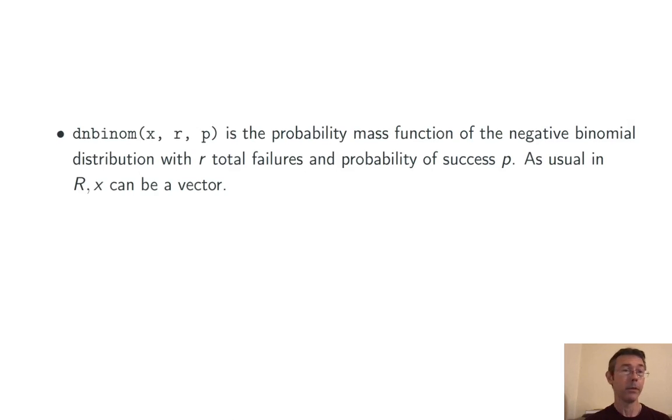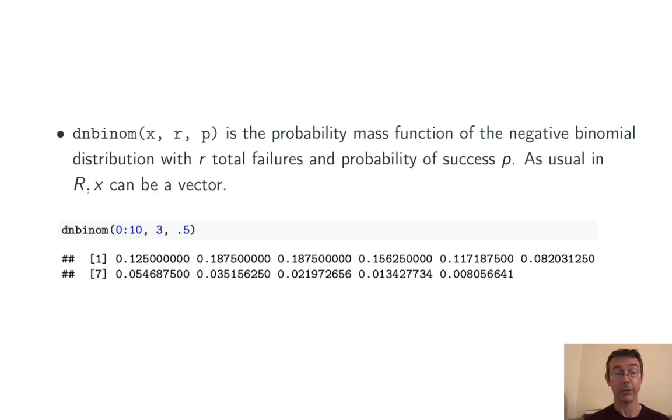Next is dnbinom. This is the probability mass function. So this is how you compute probabilities for specific values in a negative binomial distribution. In particular, as usual in R, x can be a vector.